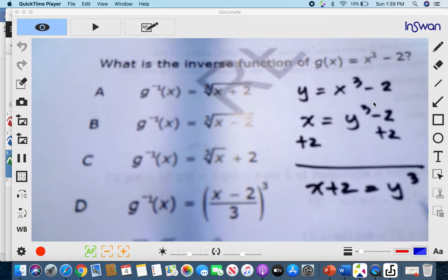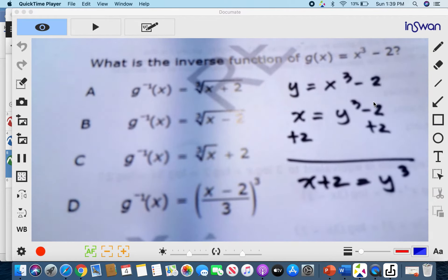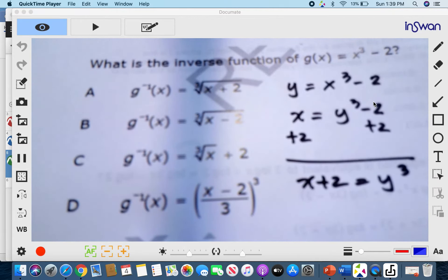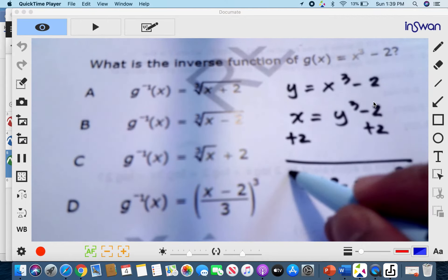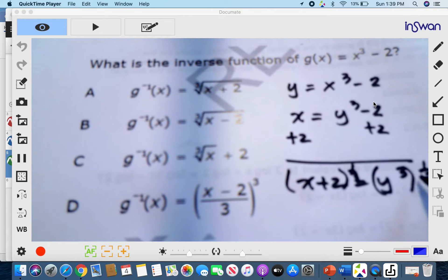Now to remove y raised to 3, because you only need y, we need to raise the whole equation to 1 third. By the law of exponents, when you raise an exponent to another exponent, you multiply those exponents. So we will raise this to 1 third and we also raise this to 1 third. It makes this now equivalent to 1.